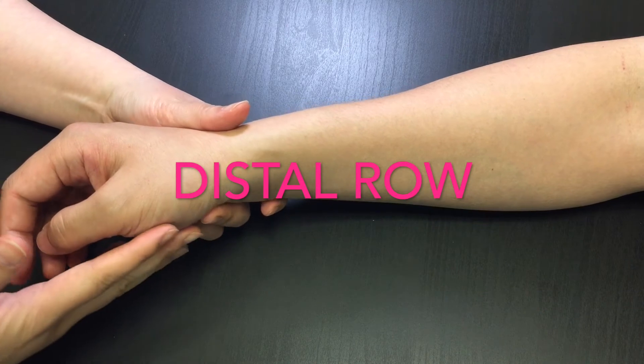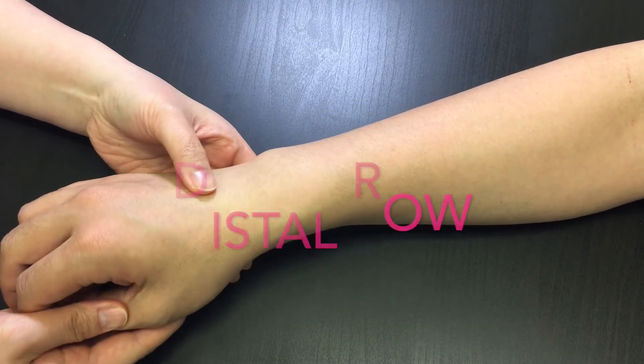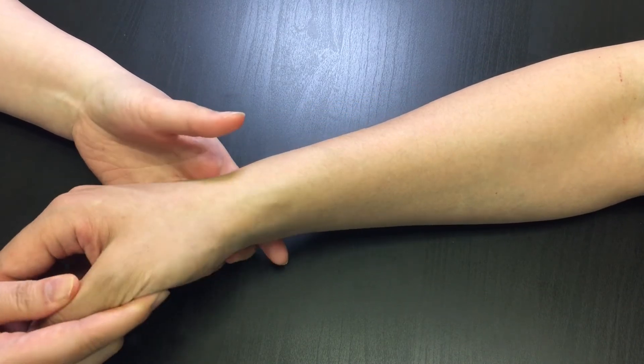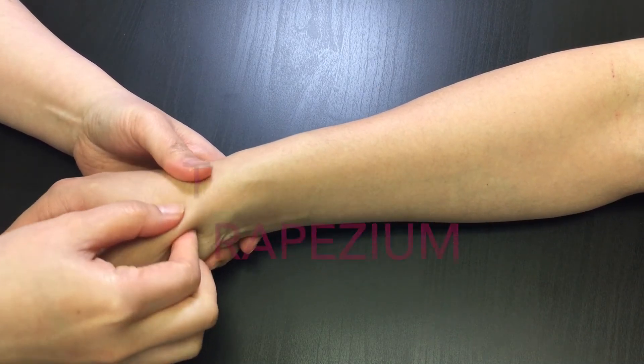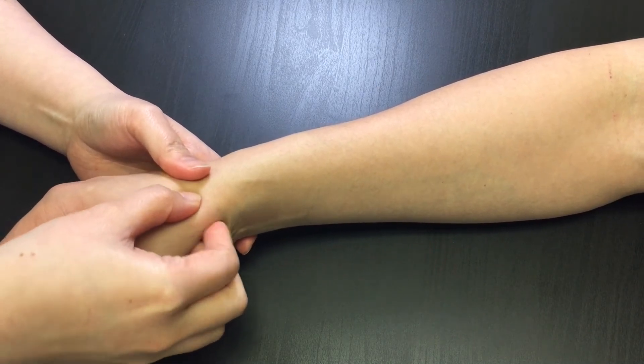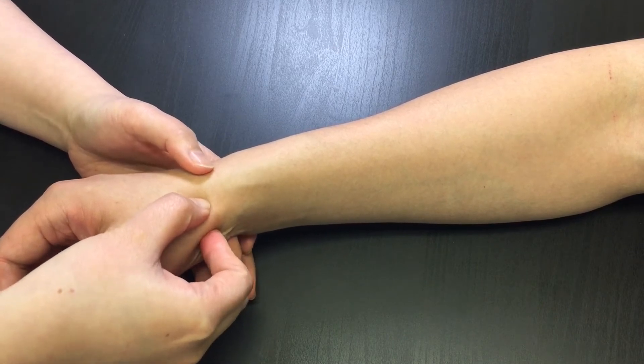Now we are going to locate the distal row of carpals from lateral to medial. First locate the first metacarpal bone and palpate along the shaft proximally and feel for the saddle joint of thumb. Trapezium is just proximal from it.